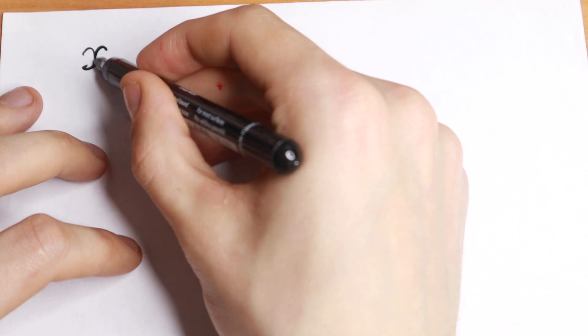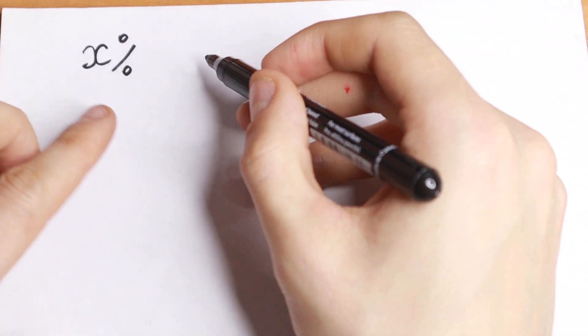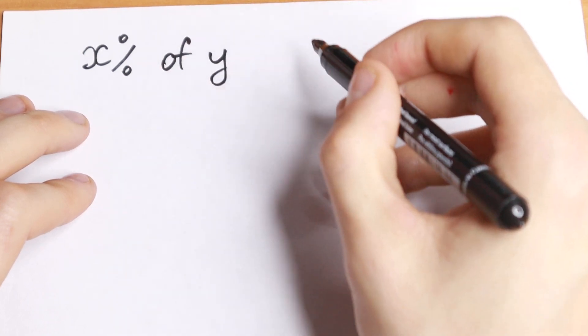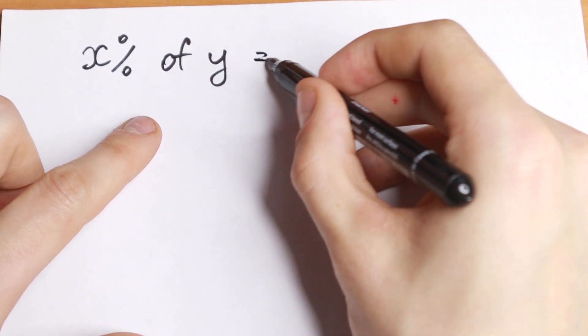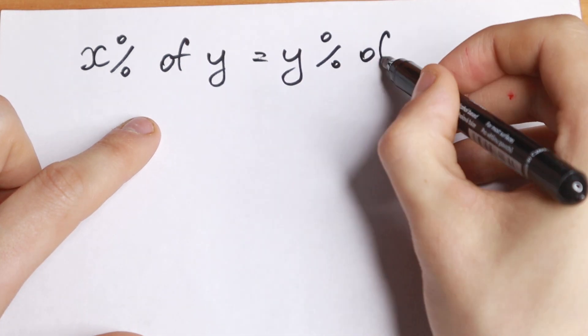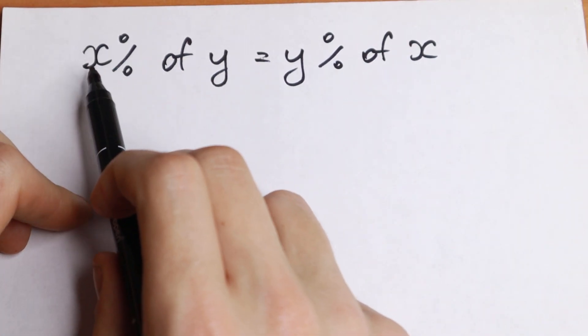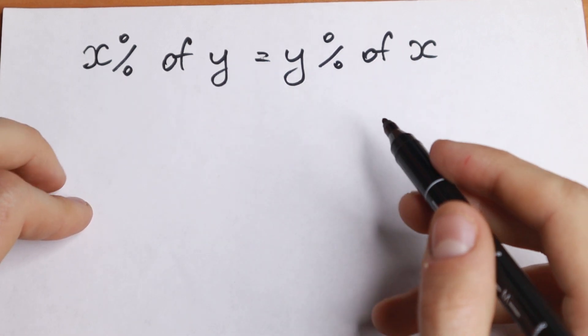Take a look. If we have x percent of y, we can write this as y percent of x. So as you can see, we can just swap these two numbers, x and y. What I mean?